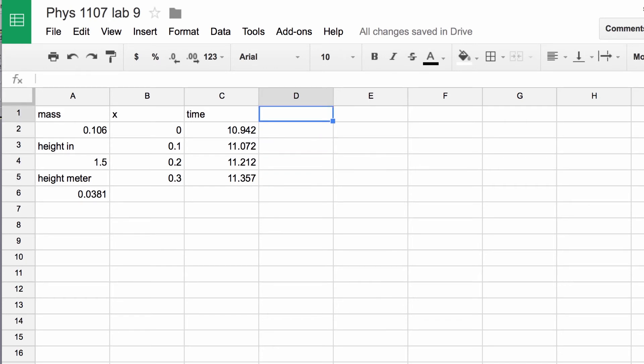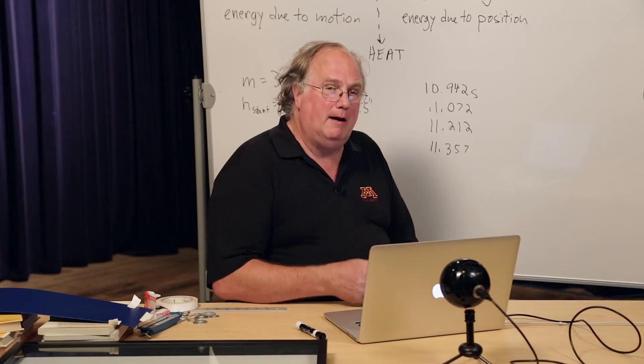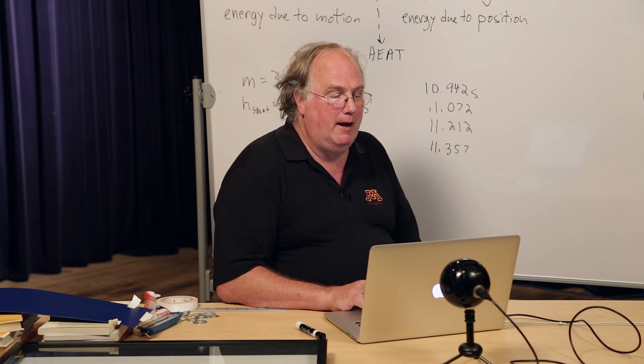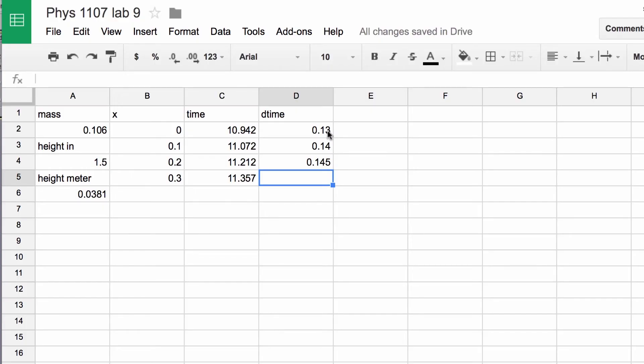So there we have the time. Now we need the change in time. I'm going to call that D time. That is equal to another formula: the time it hit the second one minus the time it hit the first one. Now we can just kind of drag this down. So we now have a column called D time, which is the amount of time passing from one reading to the next. They're all about the same, which is good. They should be. The velocity should be constant and the distances are the same, so it's a good thing that they're all about the same.